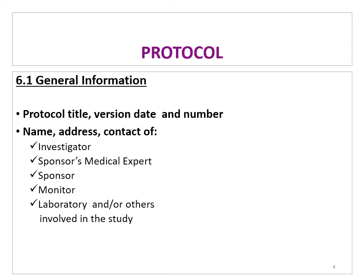Now we will cover the main sections and headers that you must fill in the protocol. The first is General Information: protocol title, version date and number, name and address of the investigator, the sponsor, the medical expert, the monitor, laboratory, and others involved in the study — for example, the radiation team, the data collection coordinator, and the statistical analysis person. In brief, this is your study team.